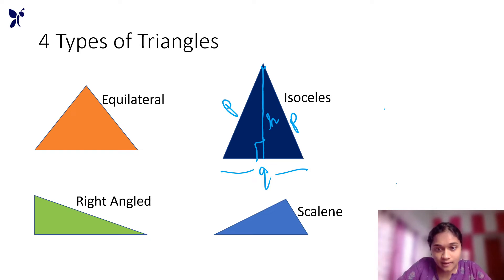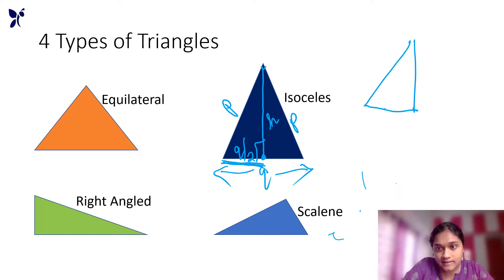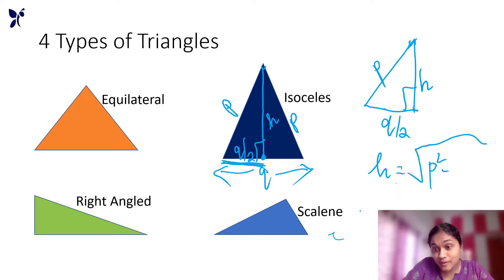Let's apply the Pythagorean theorem. We can apply the base length q, the perpendicular to q, and the left side of the bottom is q by 2. In this triangle, we can apply the Pythagorean theorem — q by 2 is the base. This side is the length p, so the height in the Pythagorean theorem is the square root of p squared minus (q/2) squared. This is the height.